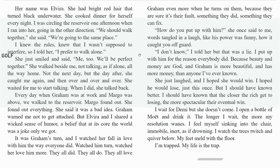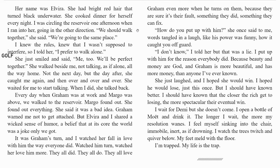To get the progress bar and menu back, tap or click in the top middle of the screen and drag your finger or mouse downward. I'll also point out the back button over here — this is how you can go back to your bookshelf to see the other titles you have checked out.